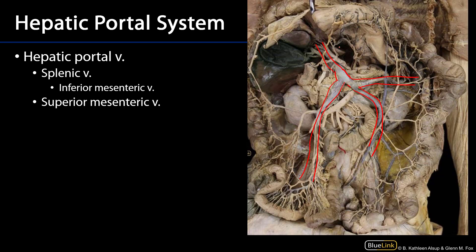In order to see any of this, one must obliterate that hepatoduodenal ligament. But we can see that there are three major elements at play here. They are the bile duct, the hepatic artery proper, and the portal vein. Sometimes this is referred to as the portal triad.